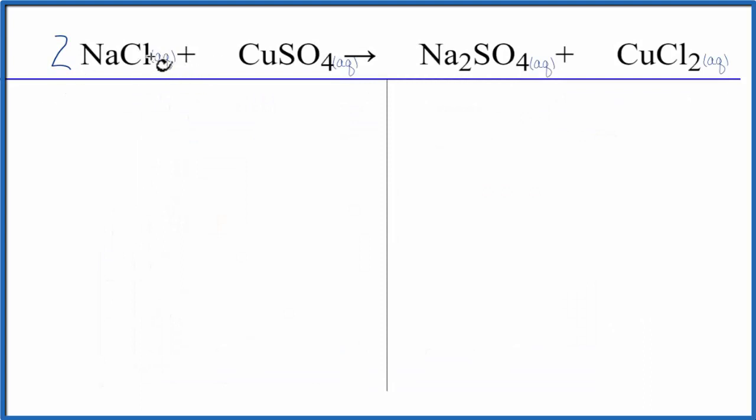So when we have the aqueous, that means that this is dissolved in water. It's broken apart or dissociated into its ions. So Na, that's Na plus, Cl is Cl minus, copper is that Cu2 plus, and then SO4, that's 2 minus, that's the sulfate ion. So these are all broken apart and dissolved in the water.